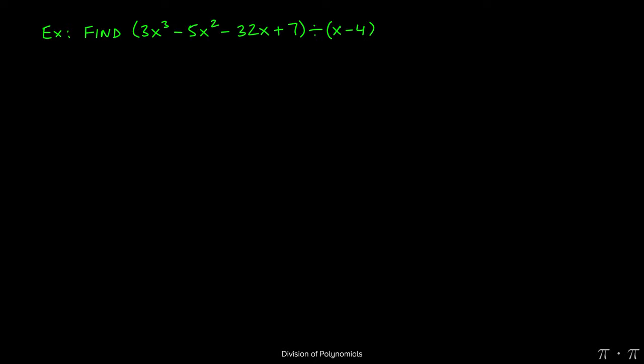With any long division problem, there's always two things to make sure of. One, that the powers of the numerator go down, which they do: 3, 2, 1, and no x value here.